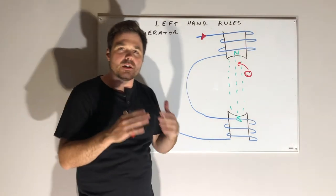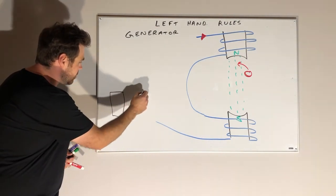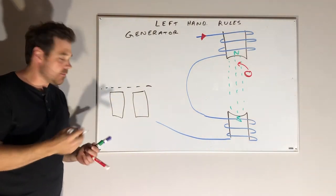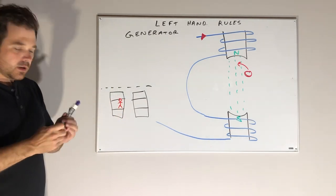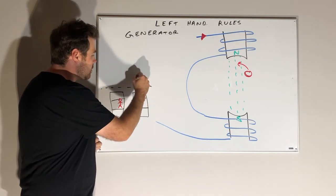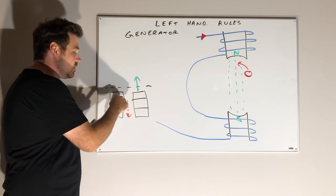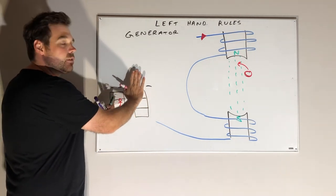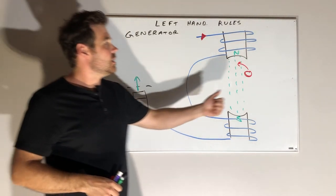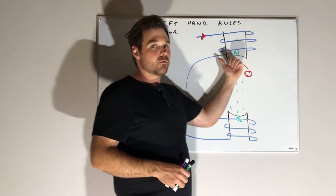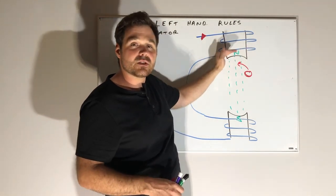Before we apply this rule, let's talk about relative motion quickly. Imagine two cars stopped at a stop sign. You're sitting in one car. As the other car begins to move forward, if you're in your car, it feels like you are going backwards - it looks like you're moving and that other car is standing still. So this car starts moving, but the relative motion is actually in the opposite direction. Because our conductor is moving this way, the relative motion is actually the other way. Relative motion of the conductor - or the magnetic field cutting that conductor - is in that direction.